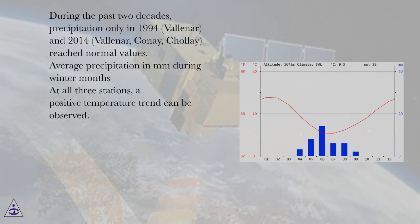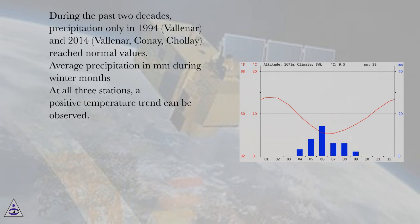During the past two decades, precipitation only in 1994 at Vianna, and in 2014 at Vianna, Cone, and Chale, reached normal values.